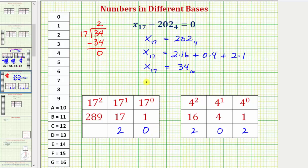So now we know that 2, 0, base 17 is equal to 34 base 10. And therefore the value of x that satisfies the equation is x equals 2, 0. I hope you found this helpful.